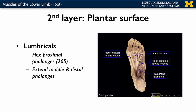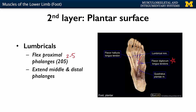As you move deeper — in this particular image, those muscles we just discussed have been removed — we're getting into the lumbricals. If you recall from previous discussions, we had lumbricals associated with the hand as well, and these are doing the exact same thing: flexion of proximal phalanges and extension of the middle and distal phalanges. There's a correction here — this should say digits 2 through 5, not including the first digit. Similar to the hand, these muscles have a proximal attachment on the flexor digitorum longus tendons, so these worm-like muscles go from the flexor digitorum longus tendons to the actual digit regions.